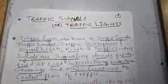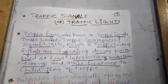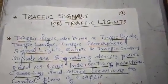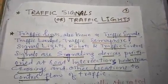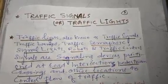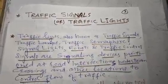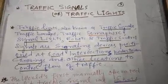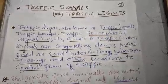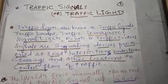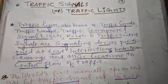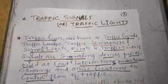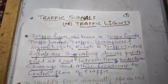Assalamu alaikum dear students, we are discussing road safety education. Today's topic is traffic signals or traffic lights. Traffic lights, also known as traffic signals, traffic lamps, traffic semaphore, signal lights, robots, and traffic control signals, are signaling devices positioned at road intersections, pedestrian crossings, and other locations to control the flow of traffic.